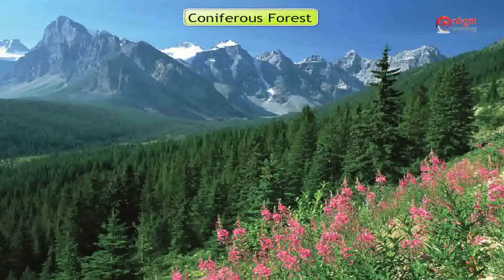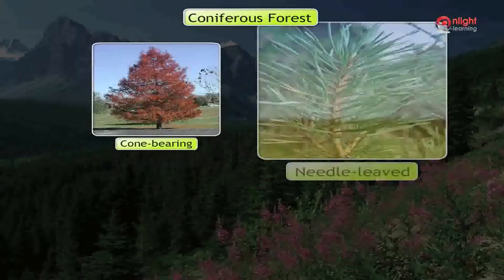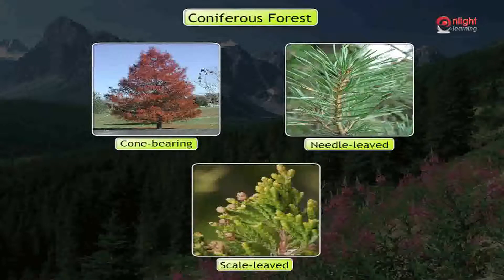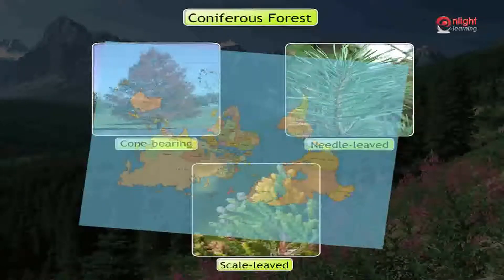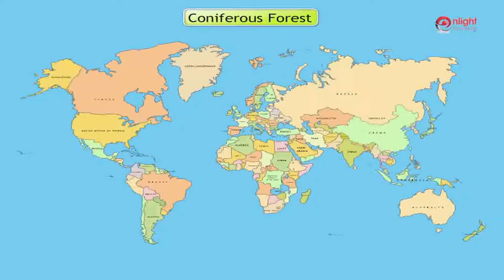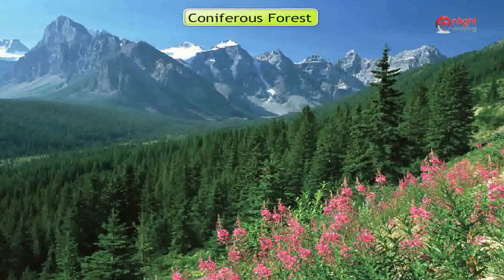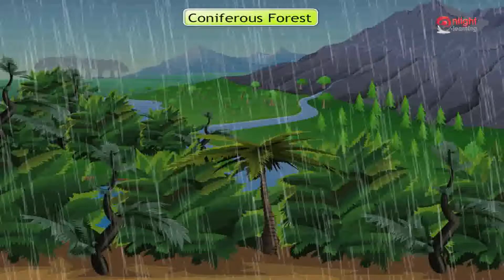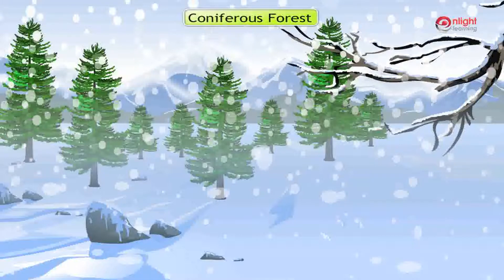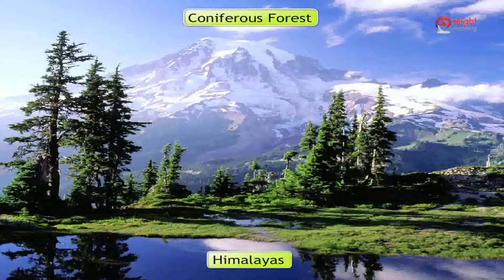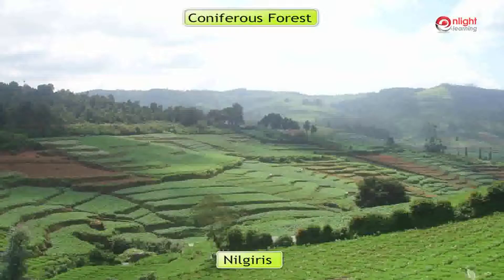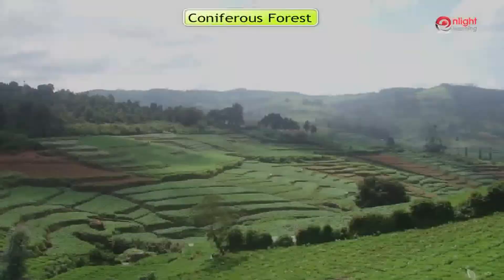Coniferous forests: Vegetation composed primarily of cone-bearing, needle-leaved or scale-leaved evergreen trees, found in regions of the world that have long winters and moderate to high annual precipitation. Precipitation means drizzle, rain, snow, etc. Thick coniferous forests are found in the Himalayas and the Nilgiris. These forests are also called mountain forests. Trees like cheer or pine trees and deodar are found in these forests.